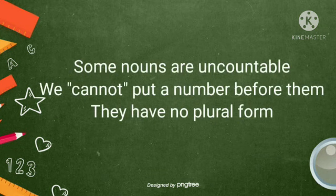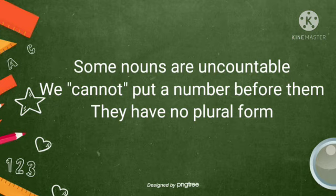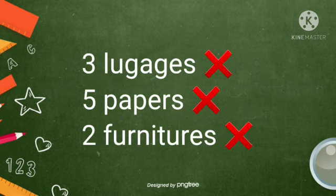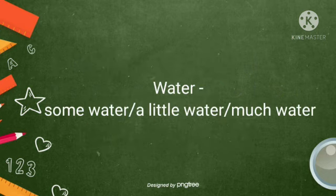Some nouns are uncountable. We cannot put a number before them. They have no plural form. Three luggage, five papers, two furnitures are wrong.